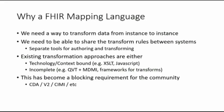Even XSLT, which is the most portable option, usually has architectural assumptions hard-coded into it. What we wanted to do is be able to share transforms between systems — and that's still what we want. We wanted to separate the authoring and execution so that you could have specialist authoring environments, and then multiple systems could actually execute the mappings reliably. So we didn't want technology bindings or context bindings.